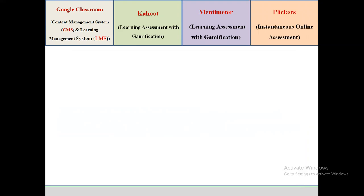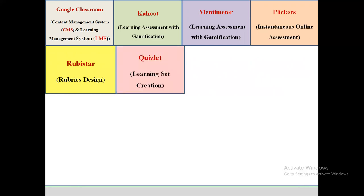Plicker is another online software useful for instantaneous online assessment. Rubistar is another software useful for rubric design for various activities like team presentation, oral presentation, scientific drawing, scientific writing, discussion, debate, etc. It has rich rubrics for more than 50 activities — whichever activity you would like to set rubrics for, you can pick and use it. Quizlet is another software useful for micro-element teaching and memorization with gamification.